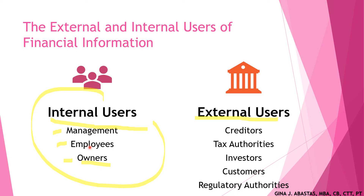For employees, the information needed is the profit for the period and salaries paid to employees. The decisions supported include job security — whether to continue staying with the company or look for other employment opportunities. For owners, the information needed includes profit or income for the period, resources or assets of the business, and liabilities of the business. Decisions supported include consideration for additional investment, expanding the business, or borrowing funds to support expansion plans.